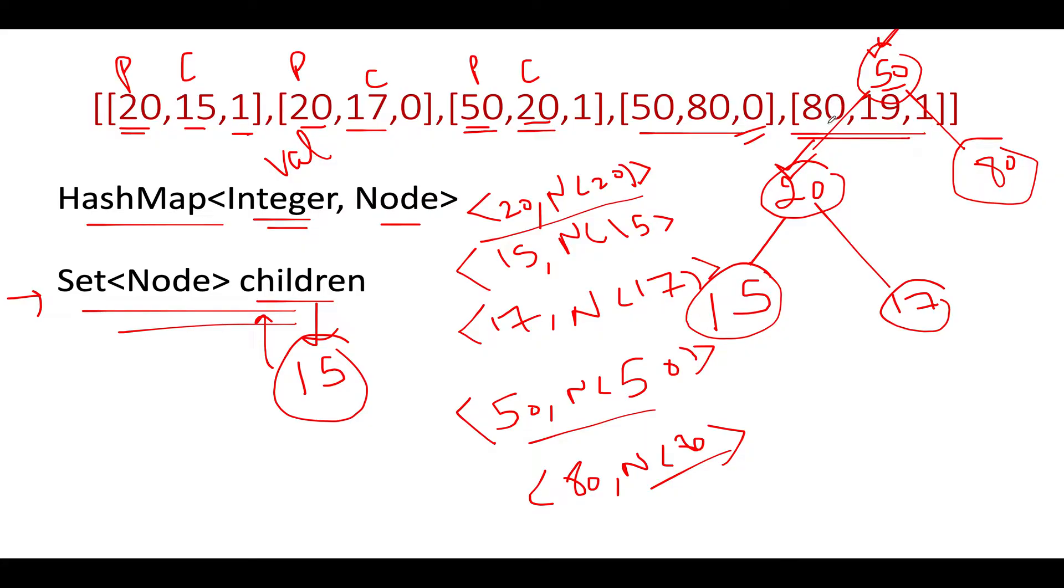The next entry that we see is 80, 19, and 1. This is acting as a parent, this is acting as a child, this is acting as a right child. Let's extract 80. 80 gets extracted from the hash map because it's already present, so we have the parent reference. 19 is not part of the hash map, as a result of it we'll create it. 19 gets added and we have created a new node 19. Let's attach 80's right to 19.